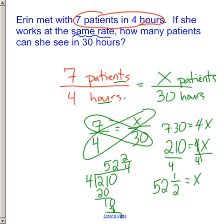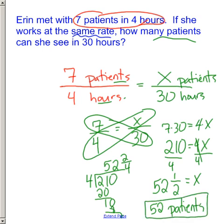This is a word problem, though. So going back to the context of the problem, how many patients? You can't really see 52 and a half patients. So really we would just say that she could see 52 patients. That's the most whole numbers of patients she can see. So in those 30 hours, she has time to see 52 patients, and it turns out she'll have a little bit of extra time.